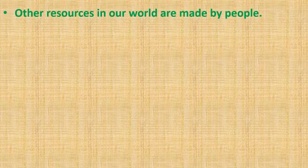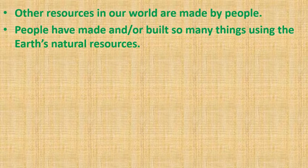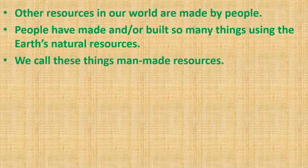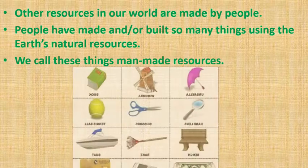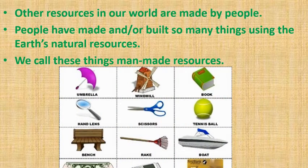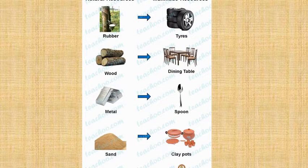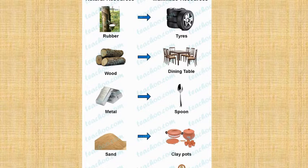Other resources in our world are made by people. People have made or built so many things using Earth's natural resources. We call these things man-made resources. Here are some examples: from rubber we get from trees, we make tires; from wood, we make a dining table; we use metal to make a spoon; we use sand to make clay pots; and we use copper to make statues.